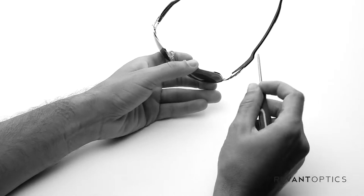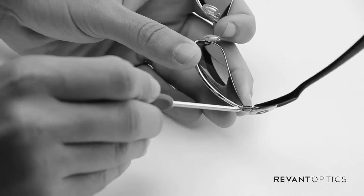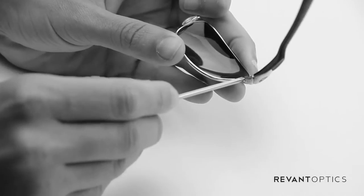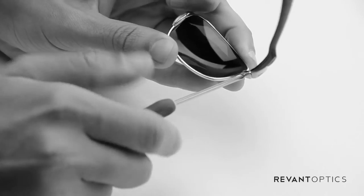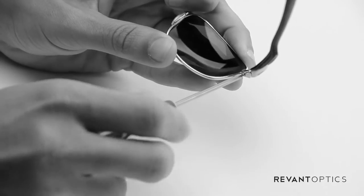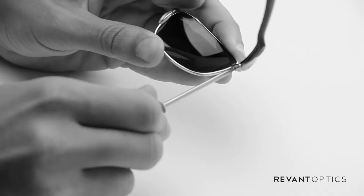So we'll go ahead and start here by finding the screw that's located here down at the bottom of the temple, where the temple meets the front of the frame, and go ahead and push on the screw there, and then just turn to the left and unscrew that, and it'll come up slowly.